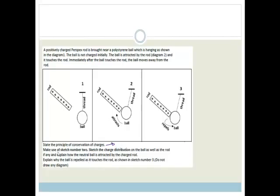Now, it says, make use of sketch number 2. So, we're looking at sketch number 2. It says, sketch the charge distribution on the ball as well as the rod, if any, and explain how the neutral ball is attracted to the charge rod. So we know that the charge rod is positive, the whole way through. Positive throughout. The ball started off being totally neutral, which meant that it had equal positive and negative charge distribution.